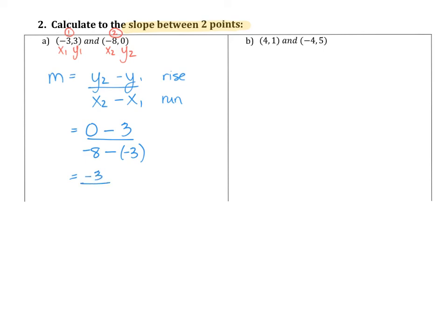And then just watch out here on the bottom. This one's a little tricky. Negative 8, it becomes plus 3. This becomes negative 8 plus 3. So negative 8 plus 3 is negative 5. Look to do a little bit of simplifying. 3 over 5 doesn't simplify, but I do have two negatives, which I know means that the actual slope is a positive 3 over 5. So the slope is 3 over 5.